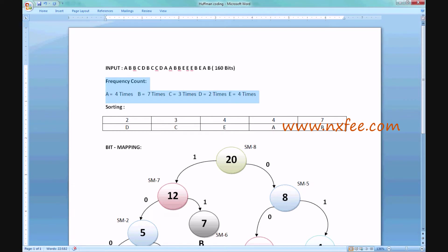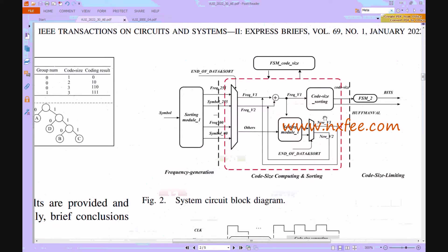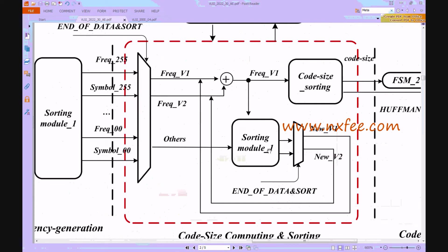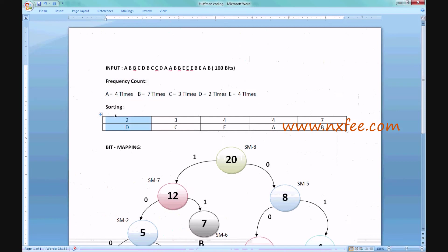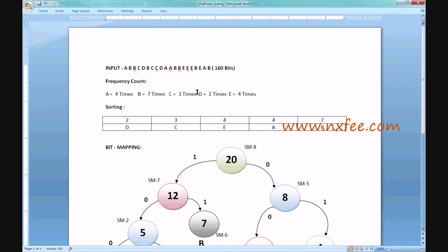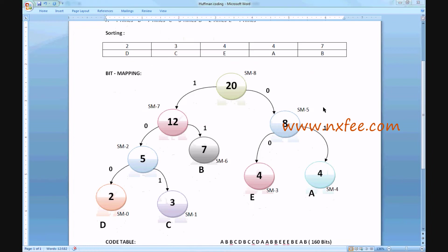After the frequency count, we need to sort the operation. As per the architecture, the sorting model arranges the characters in ascending order of frequency. The least frequent is D, followed by C, E, A, B. After sorting, we create the bit mapping.